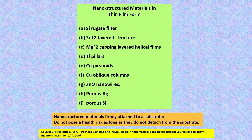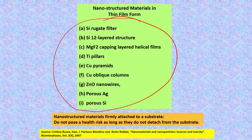To reduce the impact, if we prevent the entry of nanoparticles into the environment, then we can reduce the impact. For example, if we utilize nanostructured materials in thin film form, these materials are firmly attached to a substrate and do not pose a health risk as long as they do not detach from the substrate. Examples of thin film forms include silicon rugated filters, titanium pillars, copper pyramids, zinc oxide nanowires, porous silver, and porous silicon.